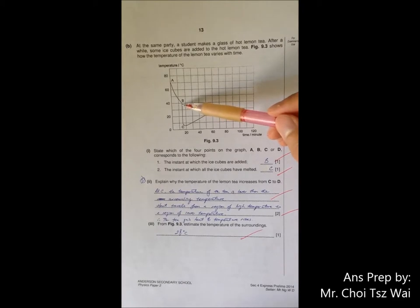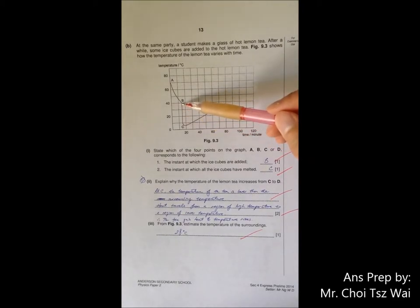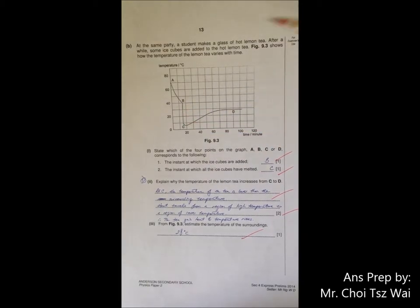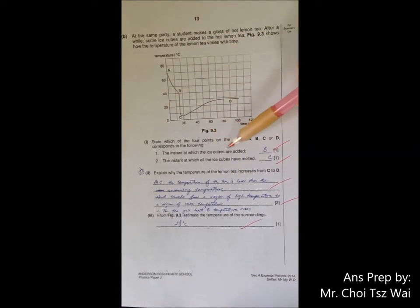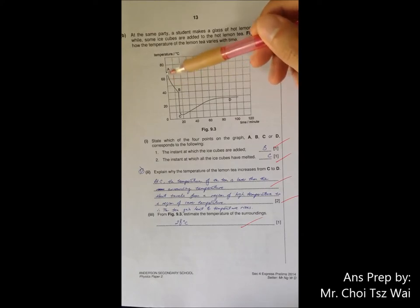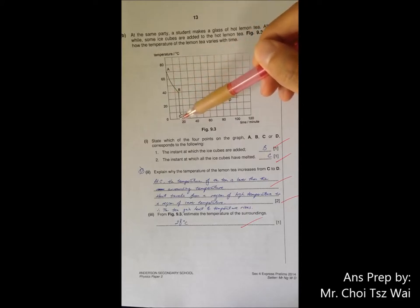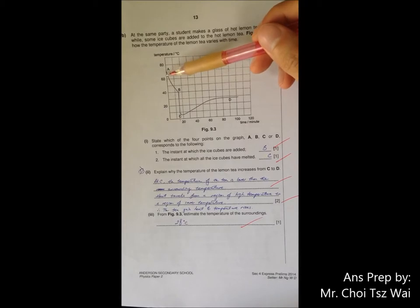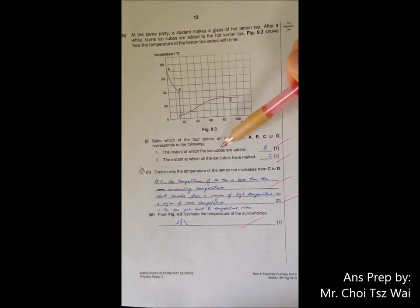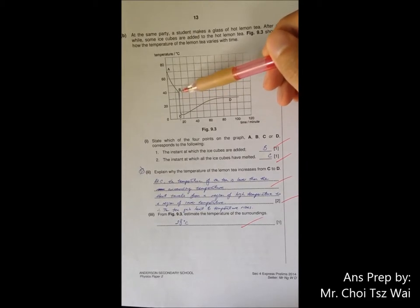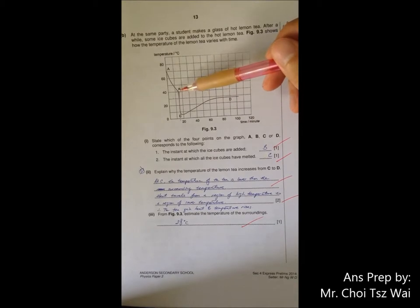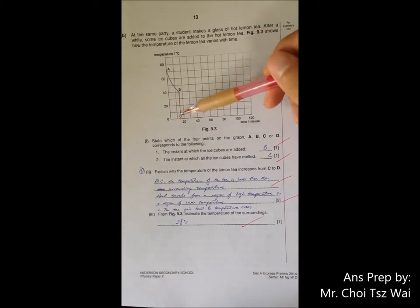For your part B, it is quite strange. How can something drop so much within zero time? The instance where the ice cube is dropping, from A to B is actually a very gradual drop. Even though it is quite squishy here, if you look at the time scale, it's actually about 15 minutes. So 15 minutes drop of 30 degree, I think is feasible. So this sharp drop here indicates that the ice cube has been just dropped into the tea. And at part C here, it's actually when the ice cube has all melted.